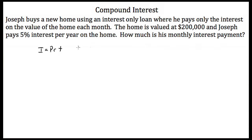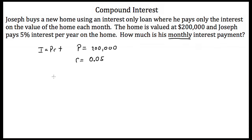In this case, our principal P is the initial value of the home loan, which is $200,000. R is our interest rate — this is 5% per year, or 0.05 per year. But we want to know how much his monthly interest payment is. We have two options: we can either divide 0.05 by 12, because there are 12 months in a year, to find the monthly interest rate, or we can calculate the amount of interest paid per year and then divide by 12.